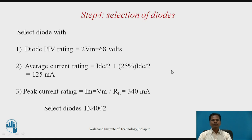Step 4 is the selection of diodes. Select a diode with PIV rating of 2Vm = 68V. The average current rating of the diode is IDC/2 plus 25% of IDC/2, which comes to 125mA. The peak current rating IM = Vm / RL = 340mA. Select diode 1N4002.